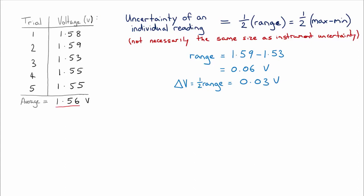We can say that on any individual reading listed below, 0.03 volts is the uncertainty. Now this calculated uncertainty supersedes any uncertainty estimate that you may have made based on the size of the divisions on your measuring instrument.